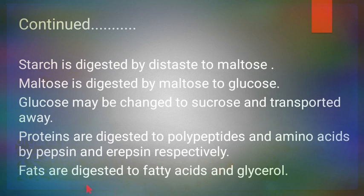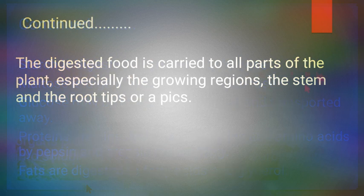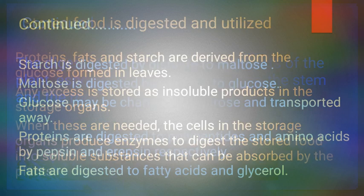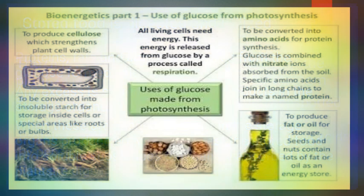When plants need energy, fats are digested into fatty acids and glycerol. Fatty acids and glycerol combine together to make fats. The digested food is carried to all parts of the plant, especially the growing regions — the stem and root tips, or leaves.